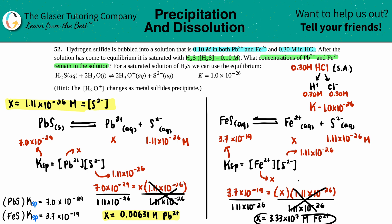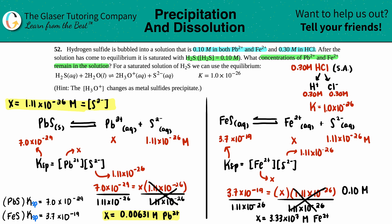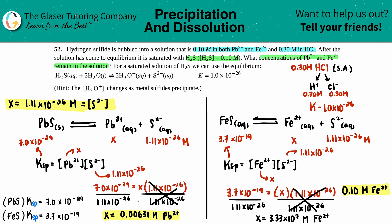Wait — can 3.33×10⁷ M be the answer? We only started with 0.1 M Fe²⁺. Since the maximum possible [Fe²⁺] is 0.1 M, which is far below the solubility limit, nothing precipitates — [Fe²⁺] remains at 0.10 M. For lead, the answer 0.00631 M is below the initial 0.1 M, meaning the excess precipitates as PbS. So [Pb²⁺] = 0.00631 M and [Fe²⁺] = 0.10 M remain in solution.